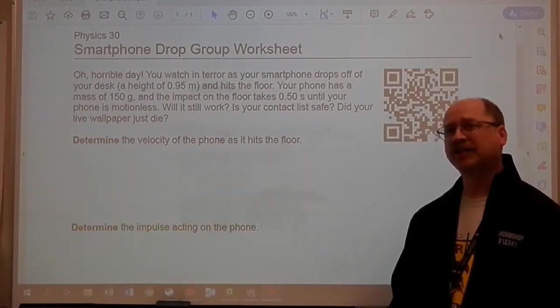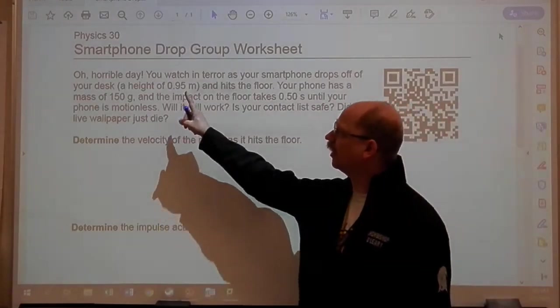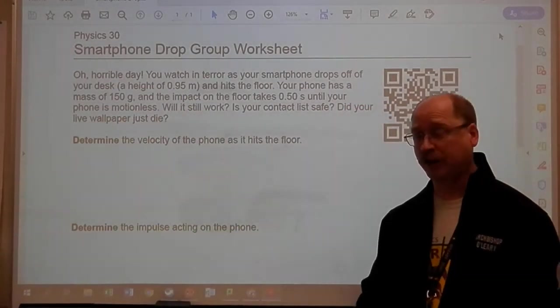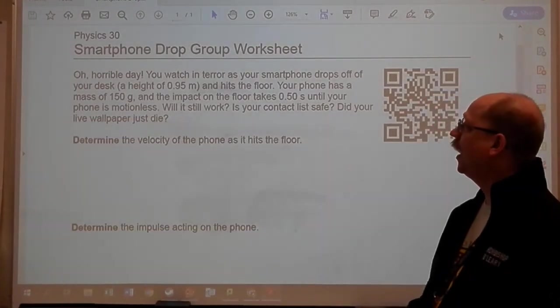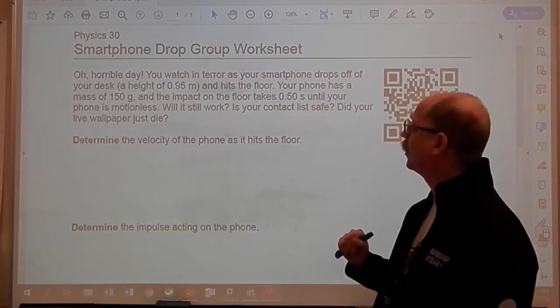In this question we're looking at a smartphone that's falling off of the desk. The height of the desk is 0.95 meters. It falls from rest, an initial velocity of zero, and the phone itself has a mass of 150 grams.